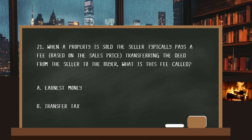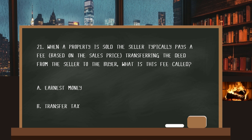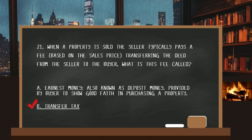Number twenty-one. When a property is sold, the seller typically pays a fee based on the sales price, transferring the deed from the seller to the buyer. What is this fee called? The answer: Transfer Tax. Earnest money — also known as deposit money — is provided by the buyer to show good faith in purchasing a property.